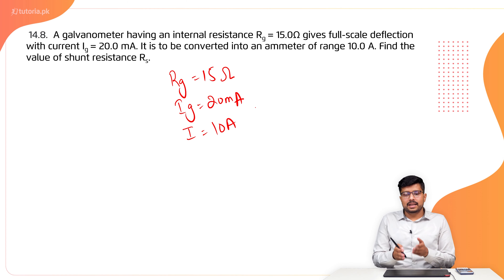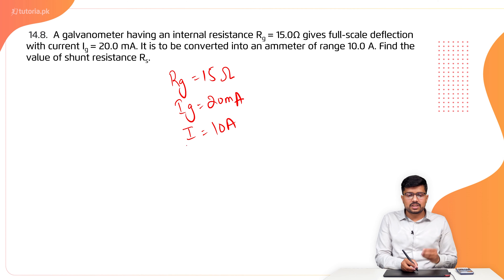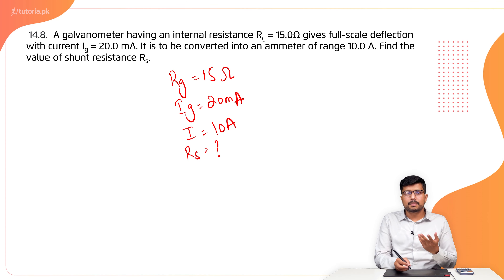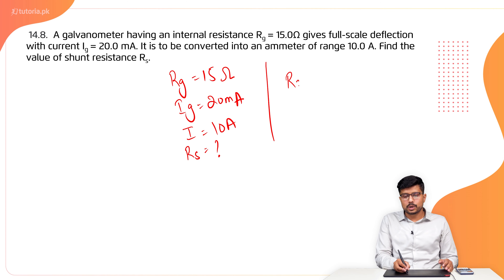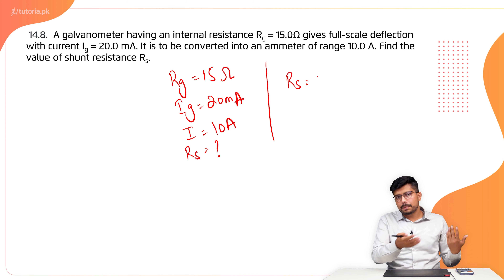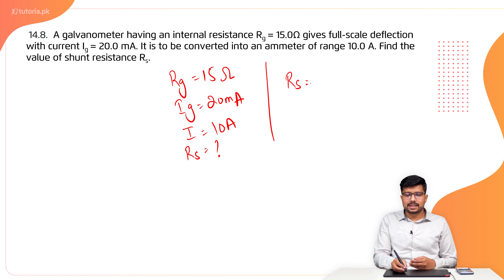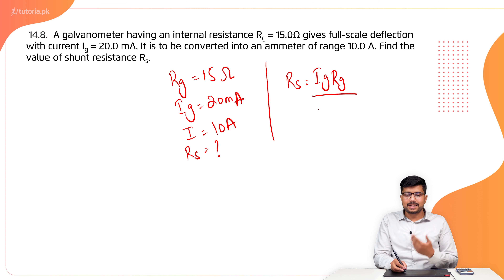We need to find the shunt resistance. The formula for the shunt resistance when converting to an ammeter is: RS = (IG × RG) / (I − IG).